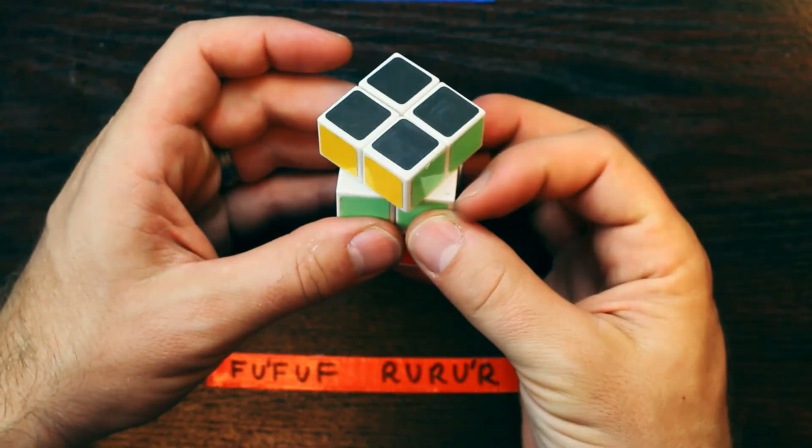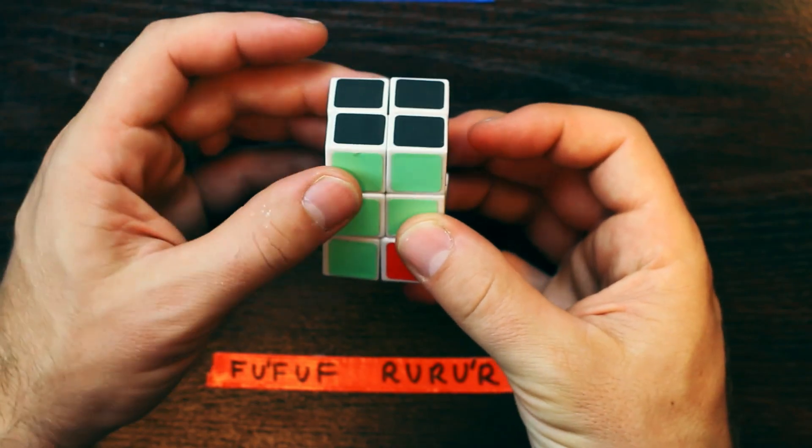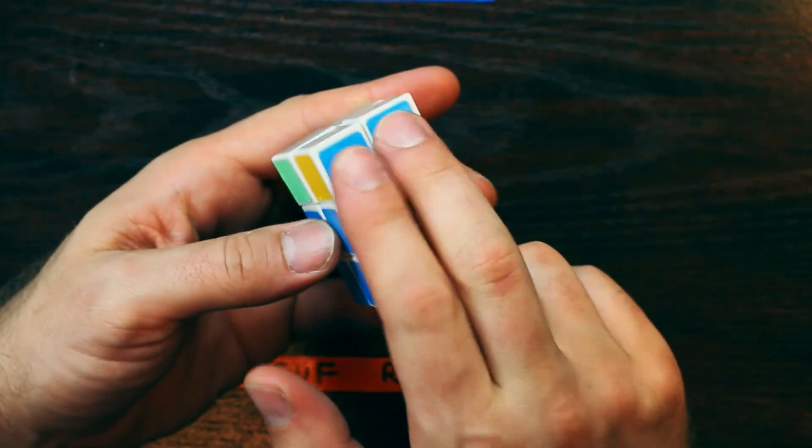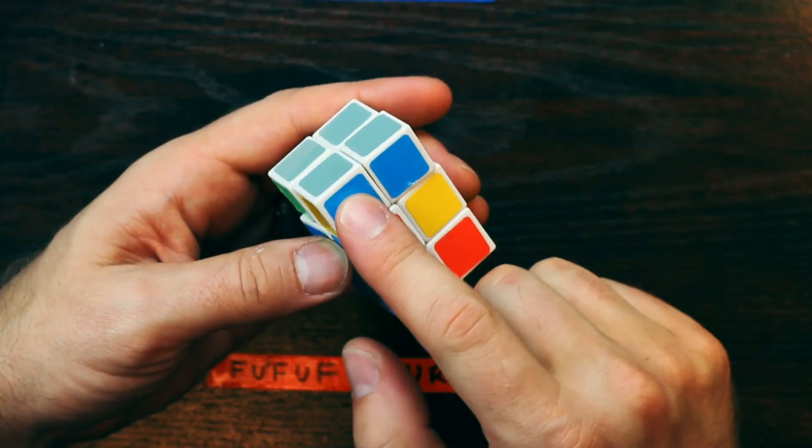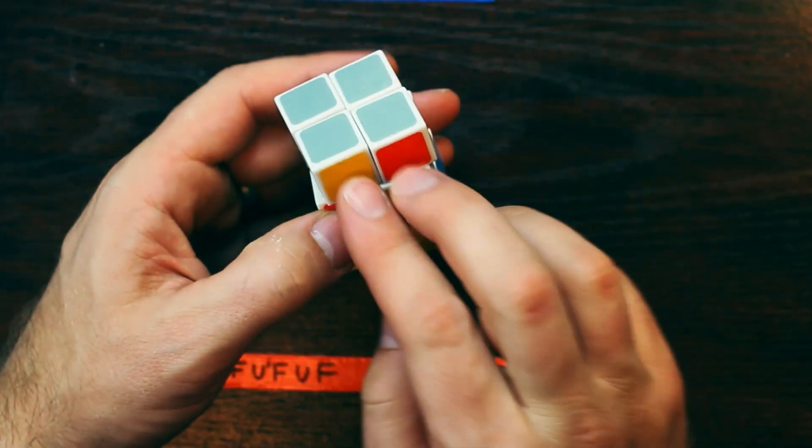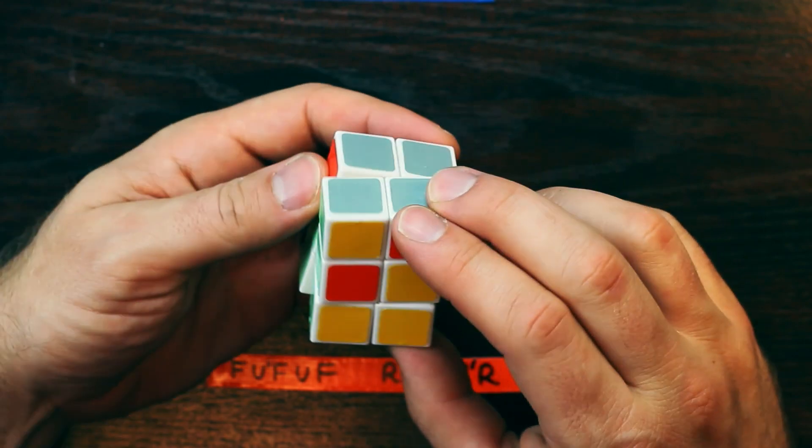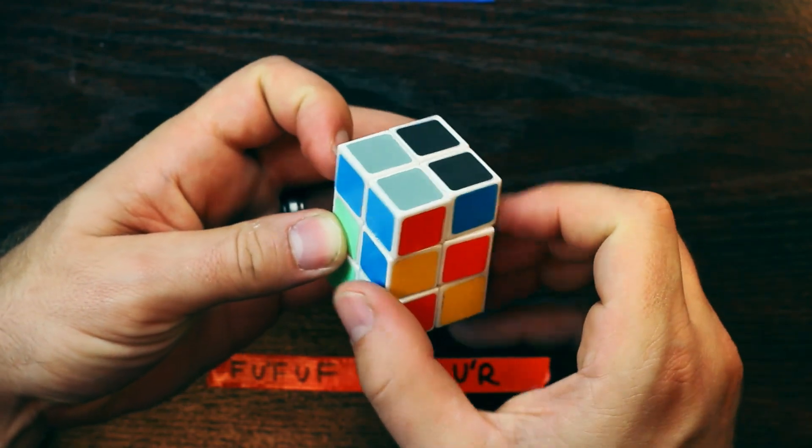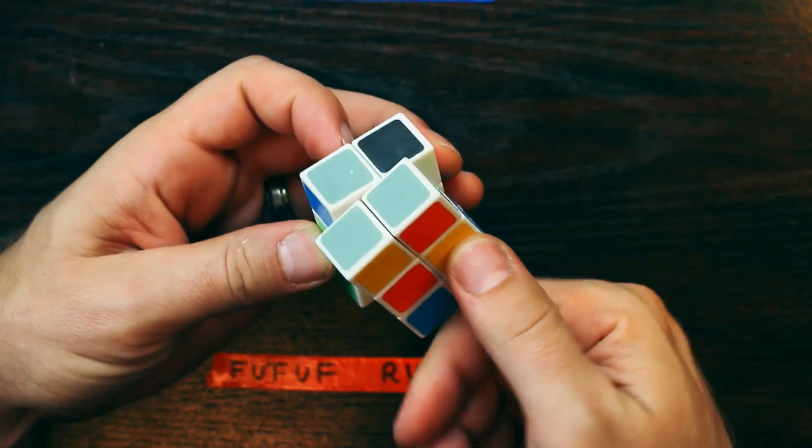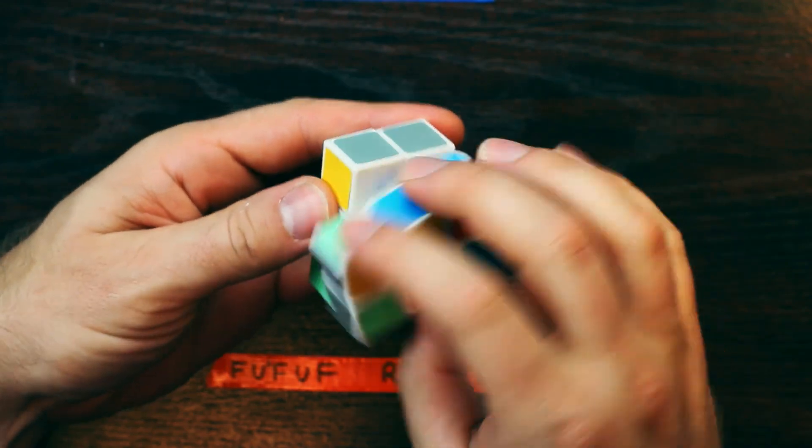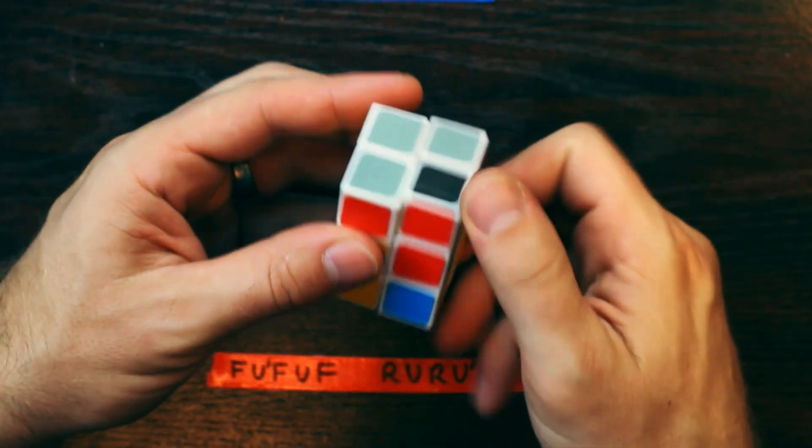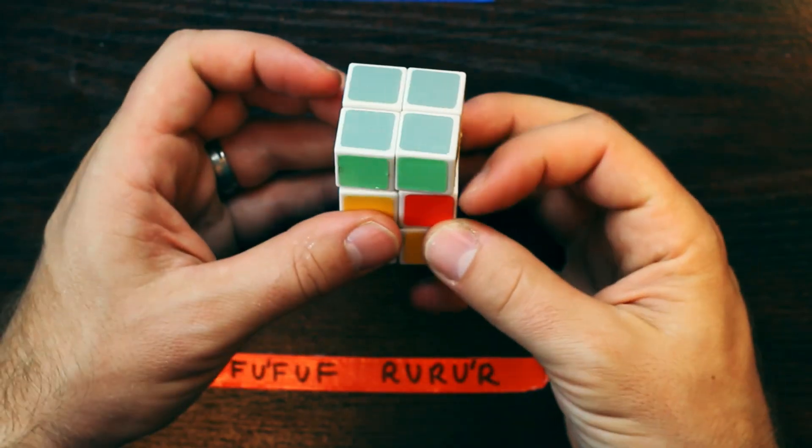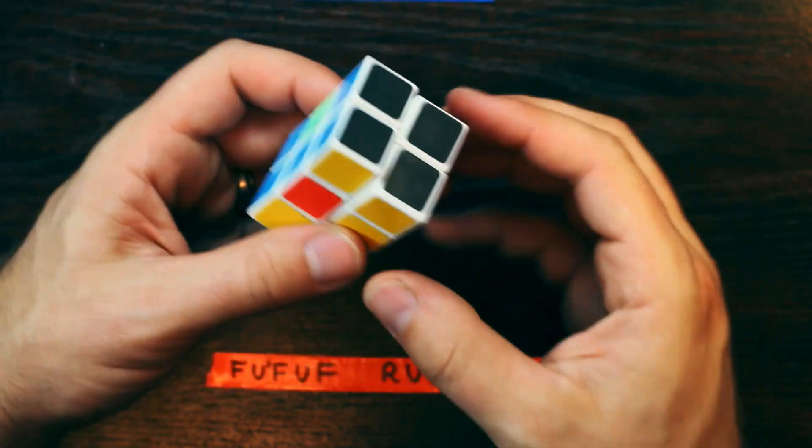Now I'm going to check to see is the other layer solved? No. But these two are next to each other. So on this side, I'm going to flip these two around. Front up, front up, front. Right up right up right. Now this is solved and this is solved.